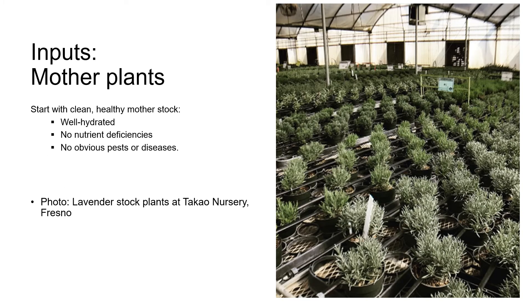For vegetative propagation we should always start with clean, healthy mother stock. Our stock plants should be well hydrated with no obvious nutrient deficiencies and no obvious pests or diseases. If we're collecting cuttings from the wild or from a cultivated landscape, we should make sure that there aren't, to the best of our knowledge, any plants infected with Phytophthora in the vicinity.